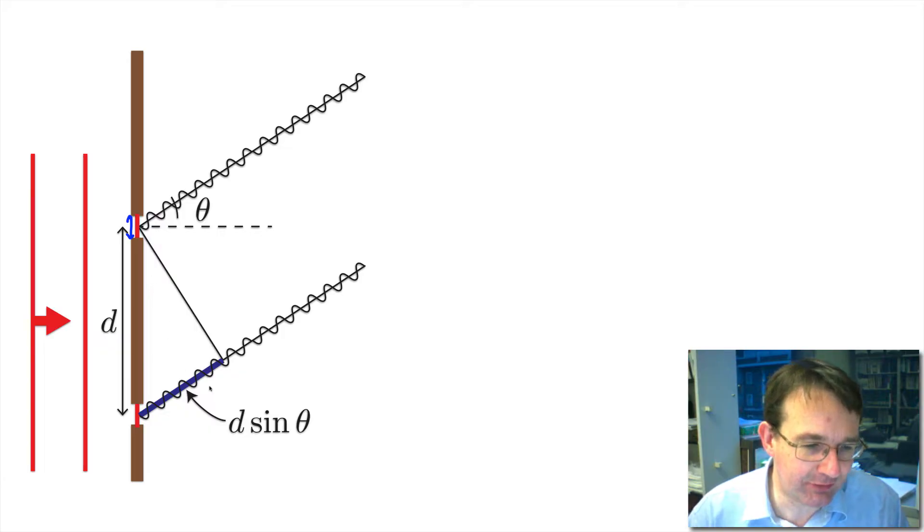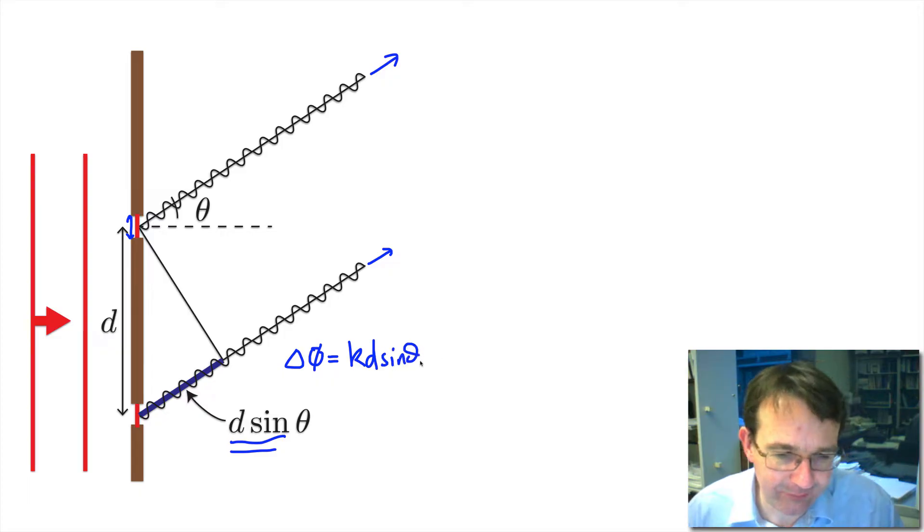We've got two point sources and if we're looking at an angle theta away from the normal, then the distance that this ray travels, assuming that the screen is a long way in this direction so we're doing Fraunhofer diffraction, then this ray here travels an extra distance of d sin theta. So we're going to have a phase difference between the two waves of k, which is the wave number, times d sin theta.